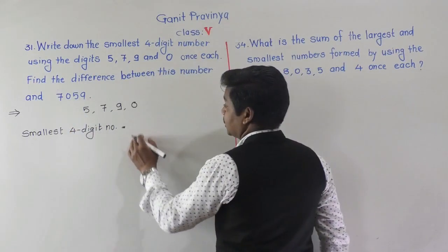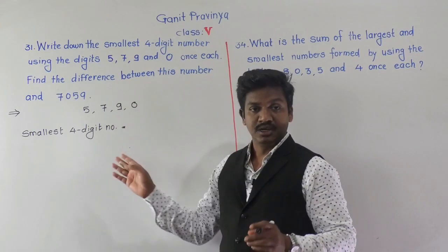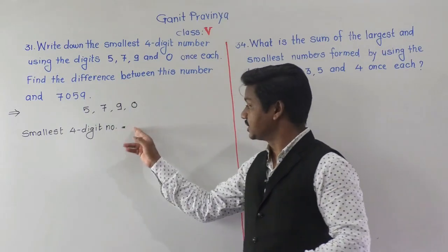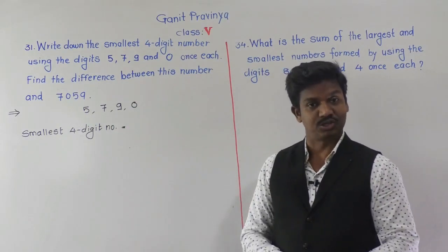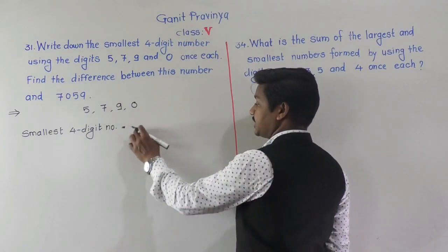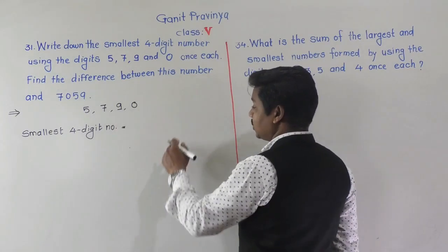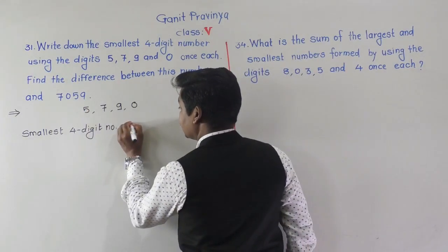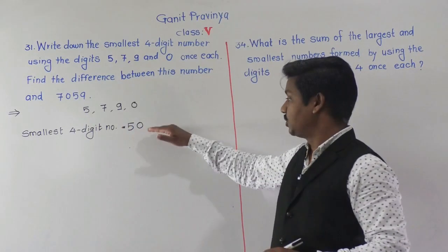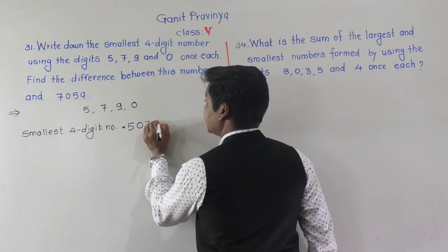Arranging in ascending order, zero is the smallest, but we cannot place zero at the first position because then it would become a three digit number. So the second smallest digit, five, will take the first position, then we write zero. So the smallest four digit number formed is 5079.